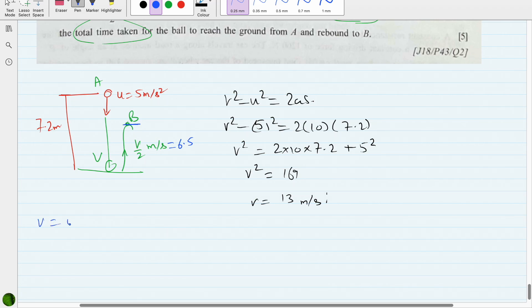If I use v = u + at, I now know the final velocity which is 13, initial is 5, acceleration is 10, and time is unknown. 13 - 5 = 10t. 13 - 5 is 8.